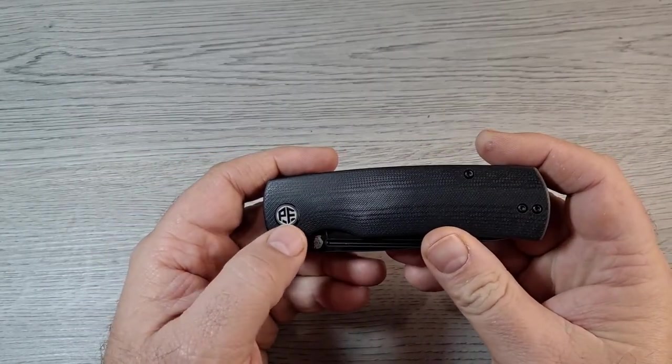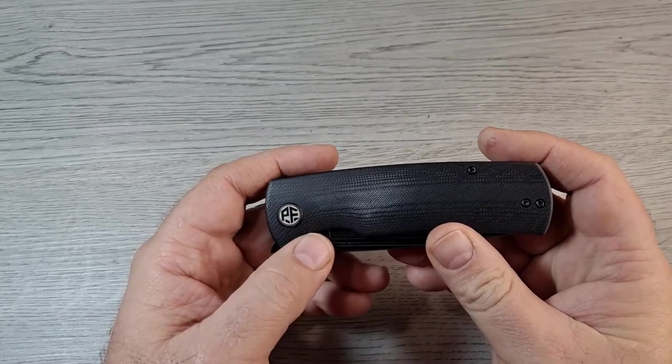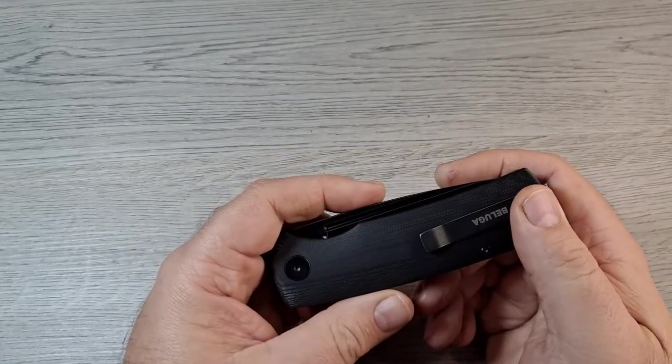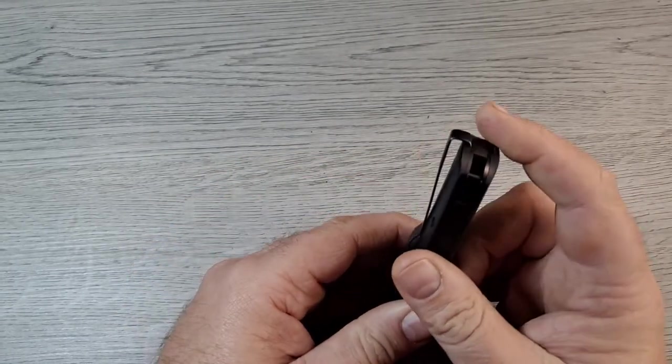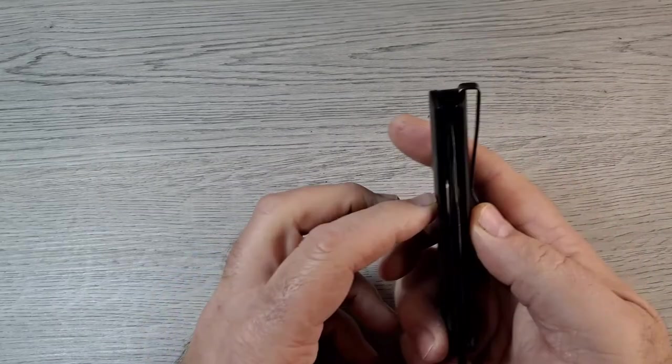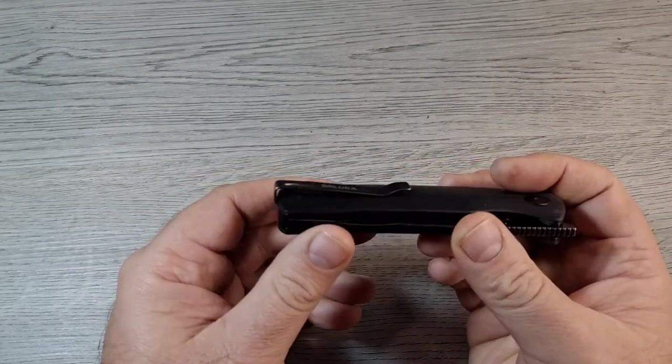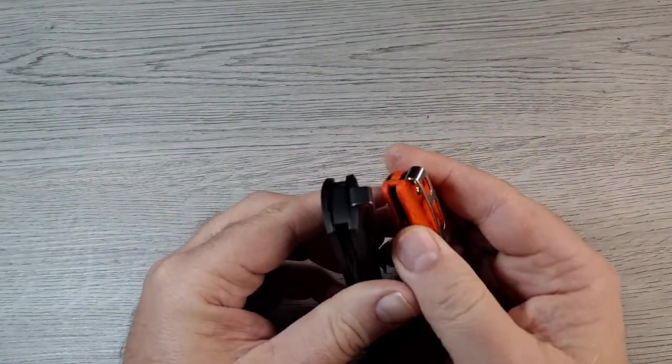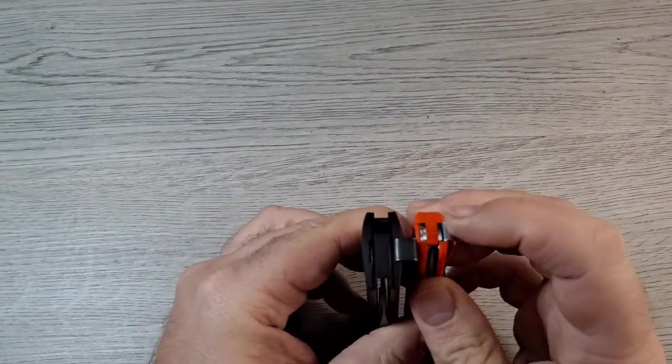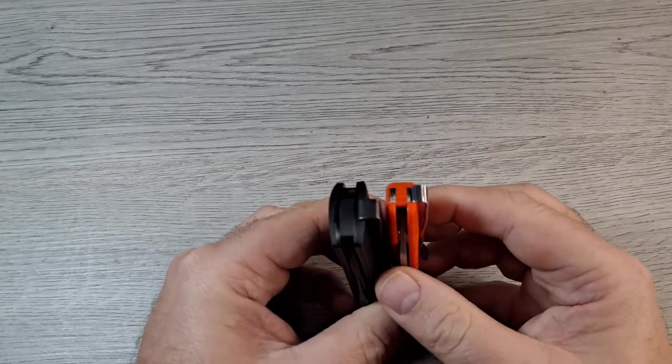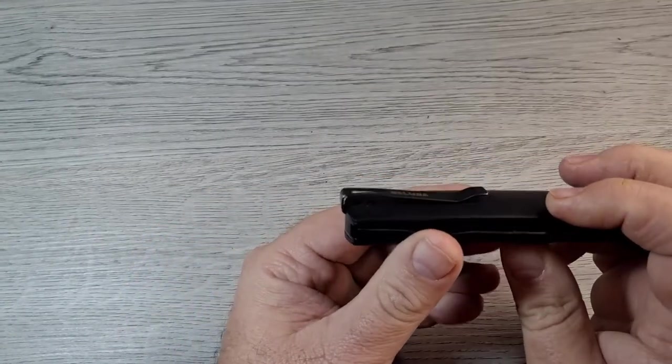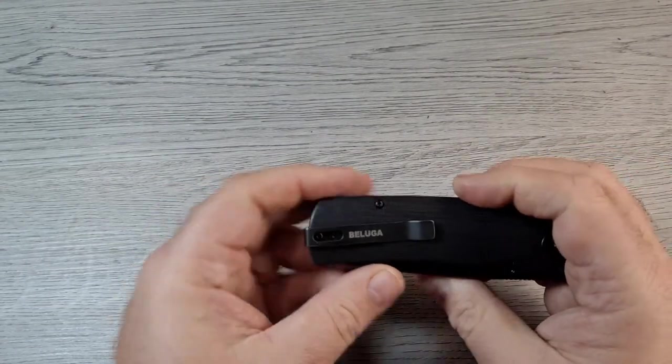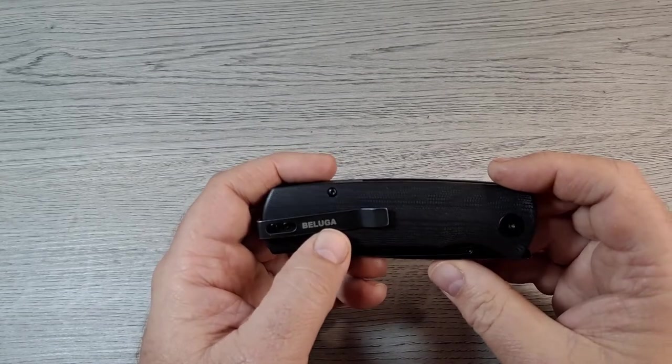Got black G10 with a couple fade marks. Got the PF logo, pivot, black hardware, black pocket clip, black G10 backspacer. You can see the pocket clip deep carry, and kind of like the Honey Badger it folds over, goes down on the inside of the scale. There's nothing in the way, plenty of room. Got the Beluga name on the side.